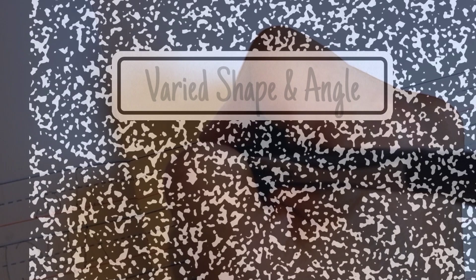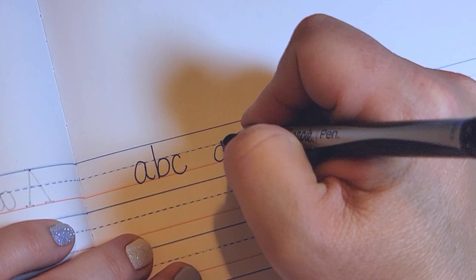The second way to change up your writing is to work with varied shapes and angles. So the first time I write ABC I'm writing it very neat and uniform. But the second time I'm going to make slightly different shapes and different angles.